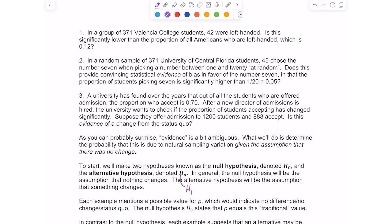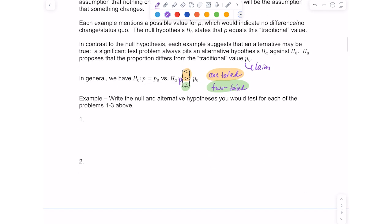In the problem, they tell us that all Americans who are left-handed is 0.12. That tells me that that's going to be my P0. That's the claim being made. So when I write my null, my null would say H0 says that the proportion of left-handed Americans is actually 0.12.